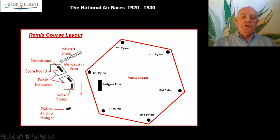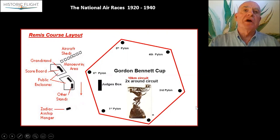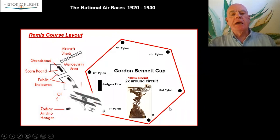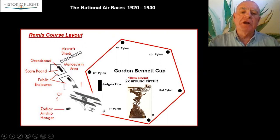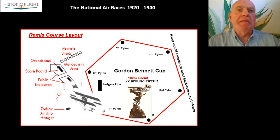Here's the Reims course layout. You can see aspects of the grandstand laid out, a scoreboard for everyone to see the events. It was a hexagon shape — six-sided with six pylons around a 10-kilometer course. For the Gordon Cup you had to fly around that twice, and it was purely based on speed and speed alone. Those entering would come through over the aircraft hangar areas, enter the first pylon, dive for speed, and go around the course twice.